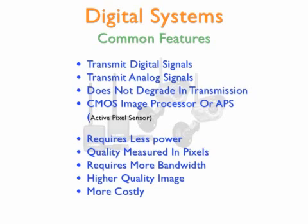Digital transmissions are adapted into analog signals transmitting from cameras to the DVR or an NVR. IP cameras use CMOS image sensors. The higher the resolution, the higher the pixelation. The higher the resolution and the pixelation, the more bandwidth is required and the higher quality of picture you are going to get. Generally speaking, IP cameras are more expensive than an analog system.